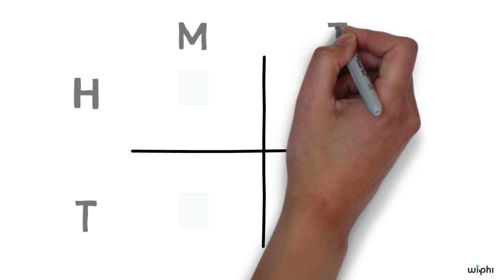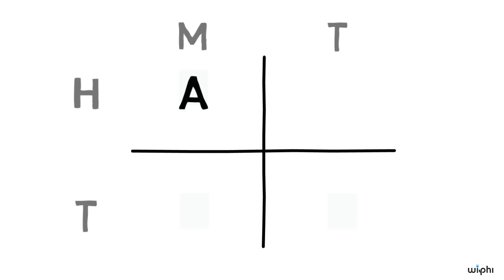Now in the heads Monday box we can write A for awake, but in the heads Tuesday box we'll write S for sleep. In both the tails Monday and the tails Tuesday boxes we can write A for awake.